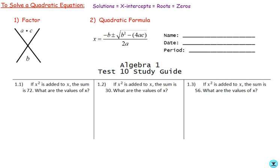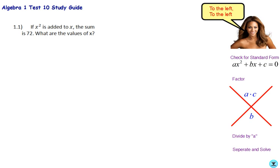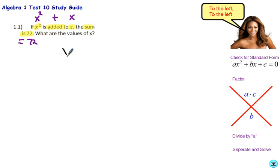Let's look at the first problem. It says: if x squared is added to x, the sum is 72. What are the values of x? This is a translation problem — we translate from English into math. Taking it piece by piece: x squared, plus x (added to x), and the sum equals 72. So we write: x squared plus x equals 72.